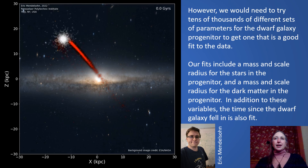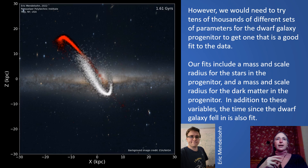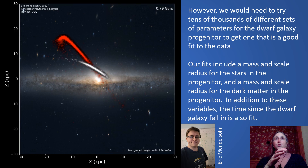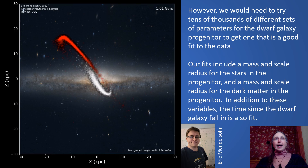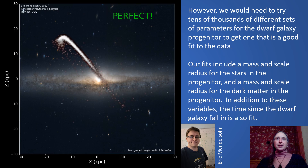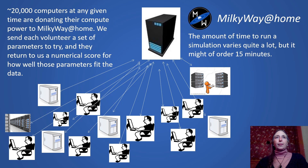My graduate student Eric Mendelson has created a simulation to show how we can determine what the dwarf galaxy looked like before it became this tidal stream. We start with a dwarf galaxy and run a simulation of it going all around the Milky Way, then at the end we compare it with the data — the data is shown in red. If that simulation was too wide, we try one smaller; if that one is too narrow, we try something in between. If we do this enough times — 10,000, 50,000, 100,000 guesses for what the dwarf galaxy looks like — we'll keep doing it until we get a perfect fit to the data.